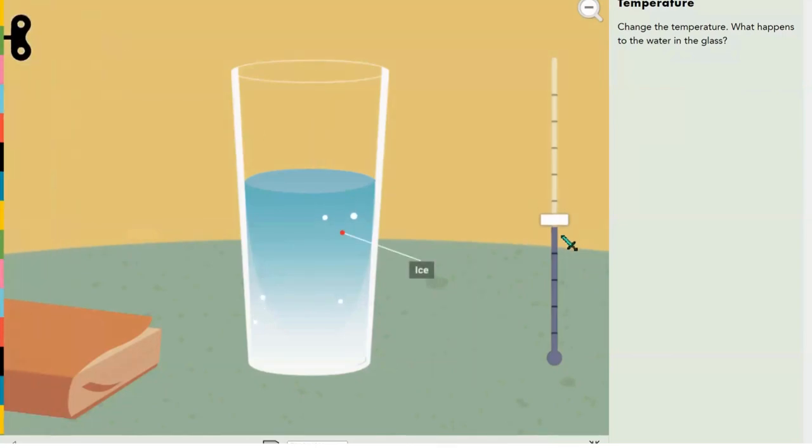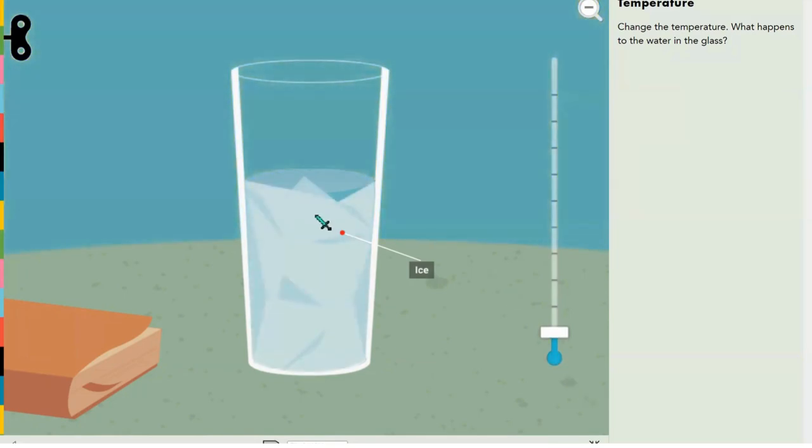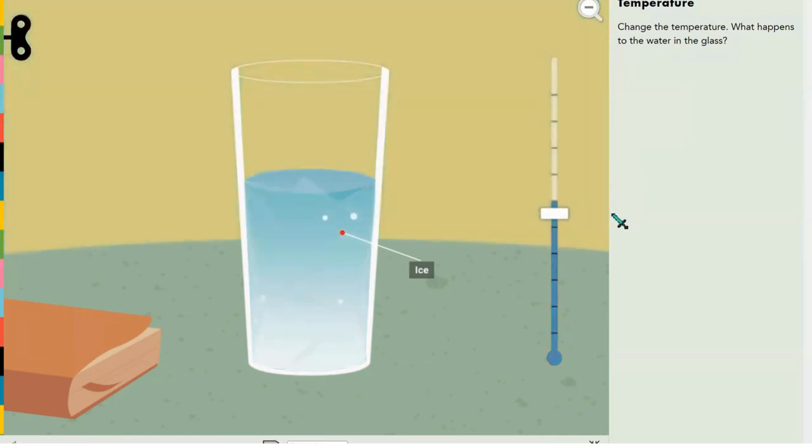What happens to water whenever the temperature drops? When the temperature drops, it becomes ice. Going up a bit, it forms back into water. But when it's super high, there's no bubbles because all of them have just escaped.